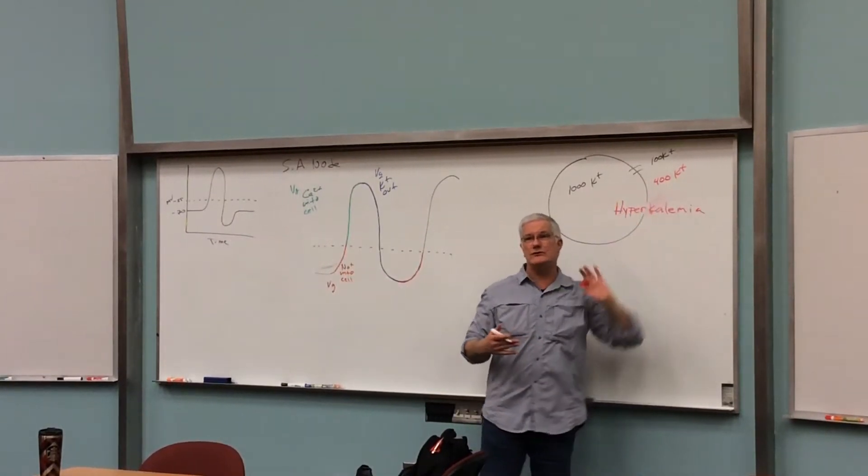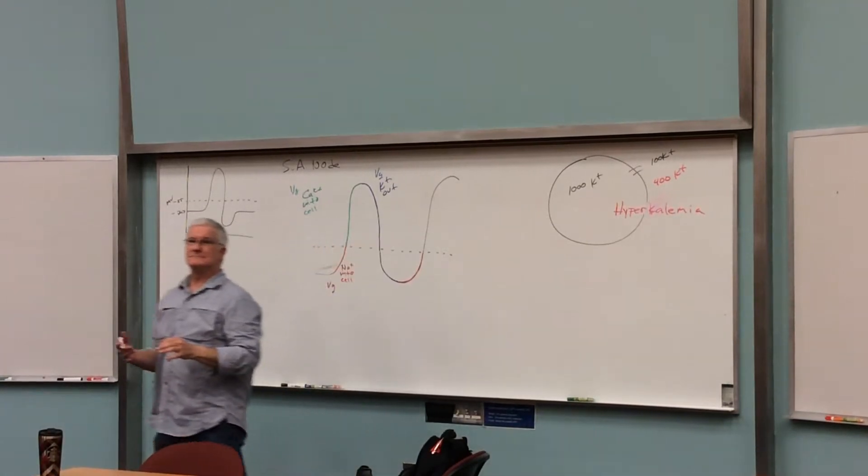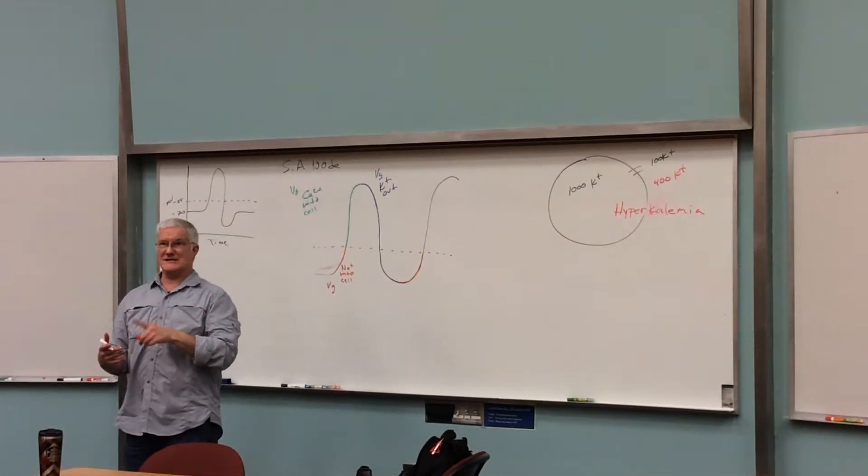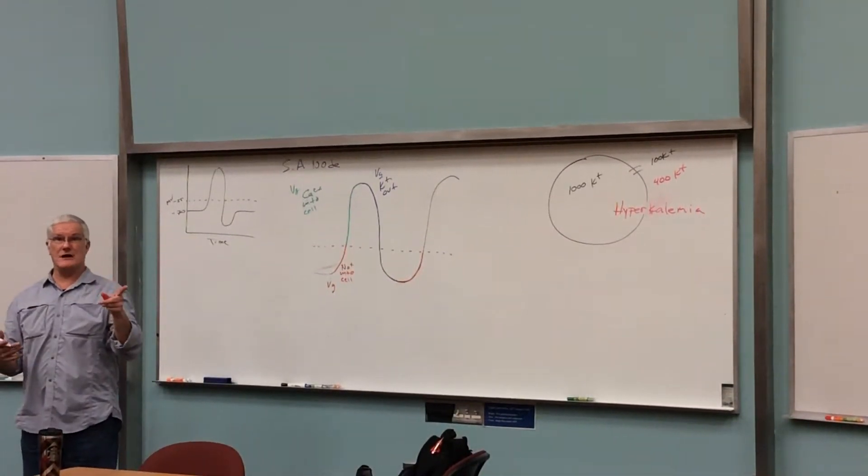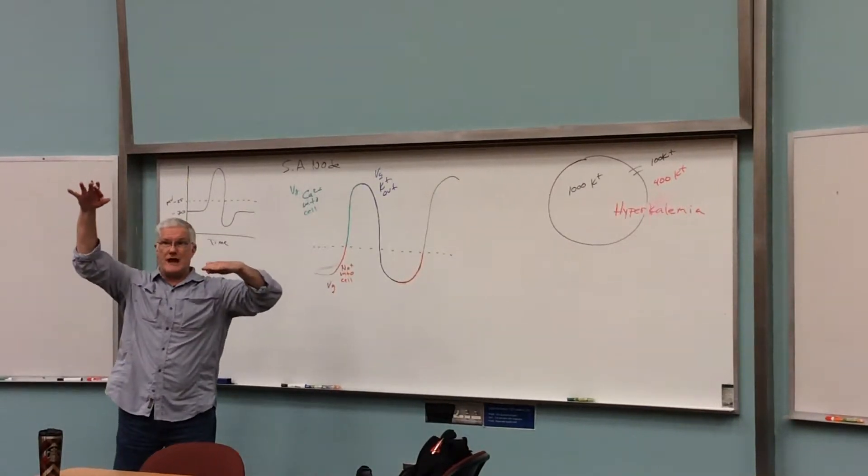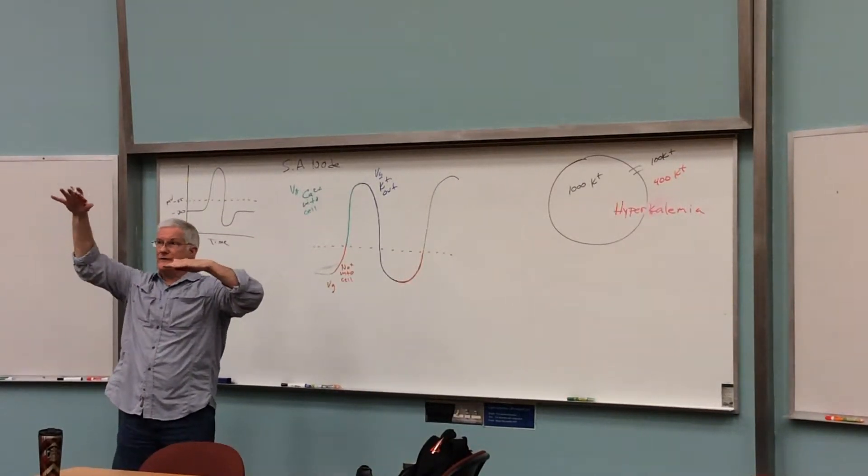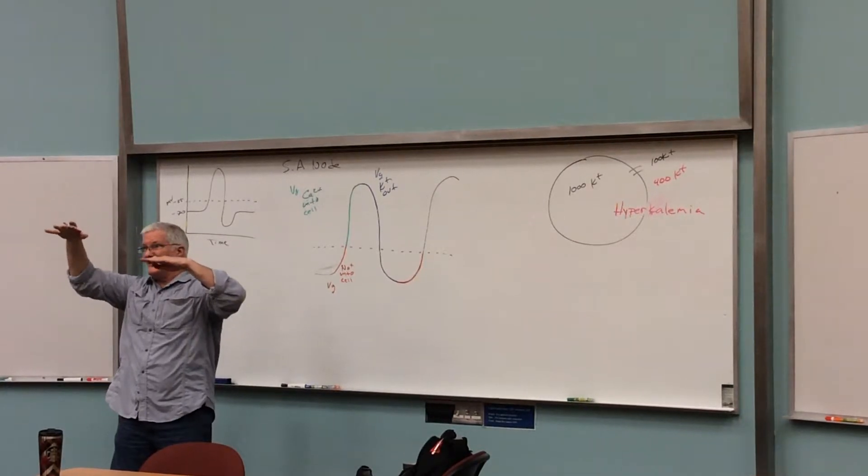What will that do to the diffusion rate of potassium? It will lower it. It will slow it down. Just like the PhysioEx exercise with neurophysiology. When you decrease the gradient, you decrease the rate of diffusion. Well, who cares? What does that do to this idea?